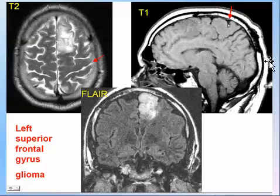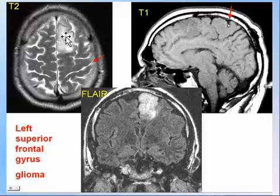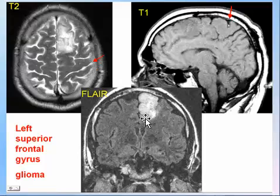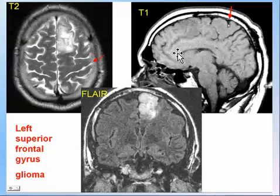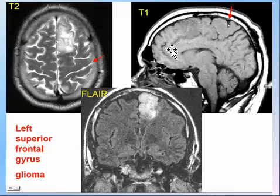Another lesion can be identified in the superior frontal gyrus — this is a superior frontal gyrus glioma. The most inferior part medially constitutes the cingulate gyrus, and this is the cingulate sulcus.